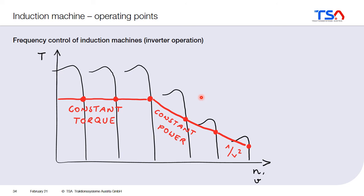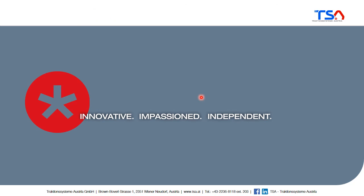Basically, we can now understand how an induction machine for a railway application works. On the one hand, the principle of an induction machine: there must be a difference between the rotating speed of the rotor and the rotating speed of the electromagnetic field in order to produce a torque. And secondly, you usually use power electronics to control the speed, and therefore the frequency, of the electromagnetic field in the stator. That's the end of chapter 3 about the induction machine.